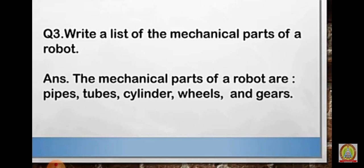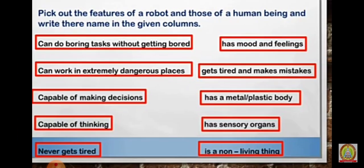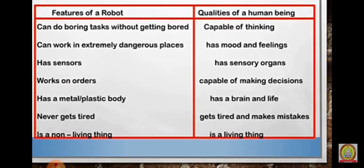Q3: Write a list of the mechanical parts of a robot. Answer: The mechanical parts of a robot are pipes, tubes, cylinders, wheels, and gears.